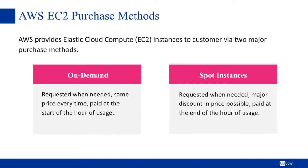Spot instances are paid for at the end of the hour of usage. The reason we have these two different methods is because Amazon is taking on the burden of purchasing all of the hardware. Not all of the capacity is used all the time, and Amazon wants to solve the problem of utilization — so they're making these instances available as spot instances in the hope that people will pick them up at a discount, giving us an opportunity to save money while still achieving our processing goals.